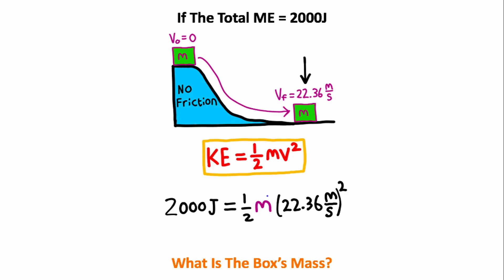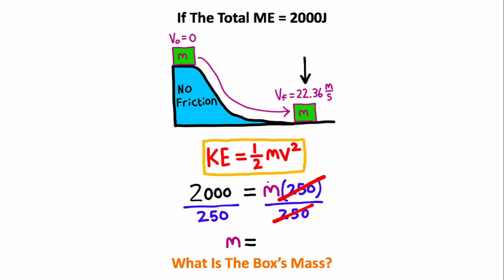Now from here, I just have an algebra problem where I need to isolate the mass. If you take 22.36 squared and type that into a calculator, it comes out to about 500 exactly. And if you take 500 and cut it in half, that will give you 250. Now at this point, all I need to do is divide both sides of the equation by 250. So the mass is going to be 2,000 divided by 250, which comes out to a mass of 8. So 8 kilograms is the mass of the box.